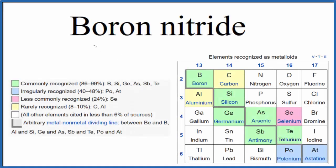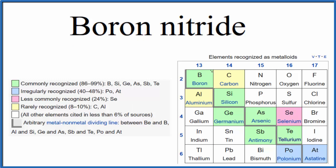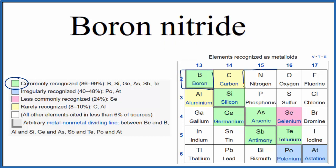In this video we'll write the formula for boron nitride. The first thing we need to recognize is that boron is commonly considered to be a metalloid. And nitride — that's from nitrogen, which is a nonmetal.